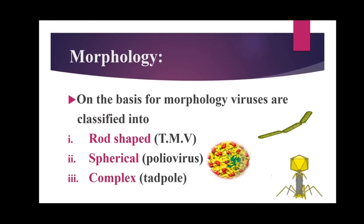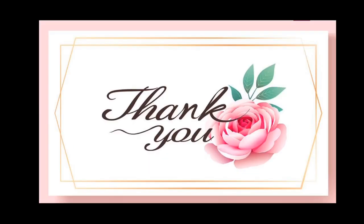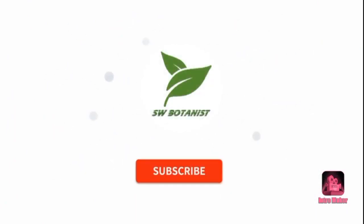This was today's lecture. I hope you all understood. You need to memorize this very well. The most important long question from Chapter 5 is the life cycle of bacteriophage, which includes both the lytic cycle and the lysogenic cycle. You need to memorize it well and also draw the diagrams accurately. The textbook has a very good diagram of both the lysogenic and lytic cycles — you need to draw it well and memorize it.